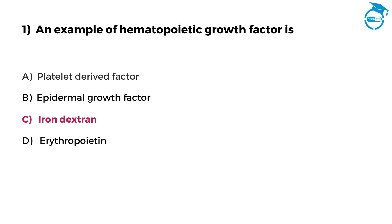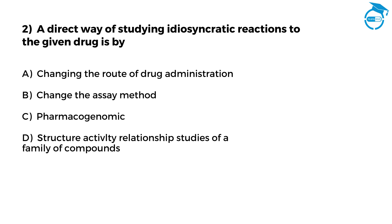Now let us quickly move to question number 2. A direct way of studying idiosyncratic reactions to a given drug is by: Option A, changing the route of drug administration. Option B, change the assay method. Option C, pharmacogenomics. Option D, structure-activity relationship studies of a family of compounds.